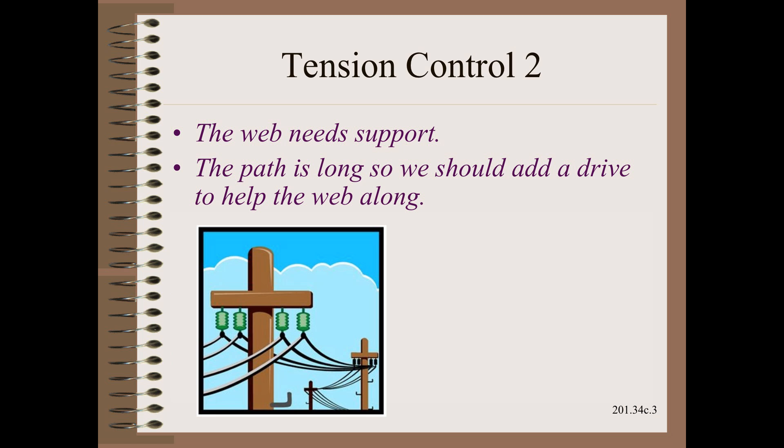The second is similar: that the total length of the web is long between drives, and thus we need another drive in between to help it along. This is not length that matters — it is the relative tension change due to roller bearing drag and inertia. This is a calculation, not an opinion, and it is well documented in my roller book.